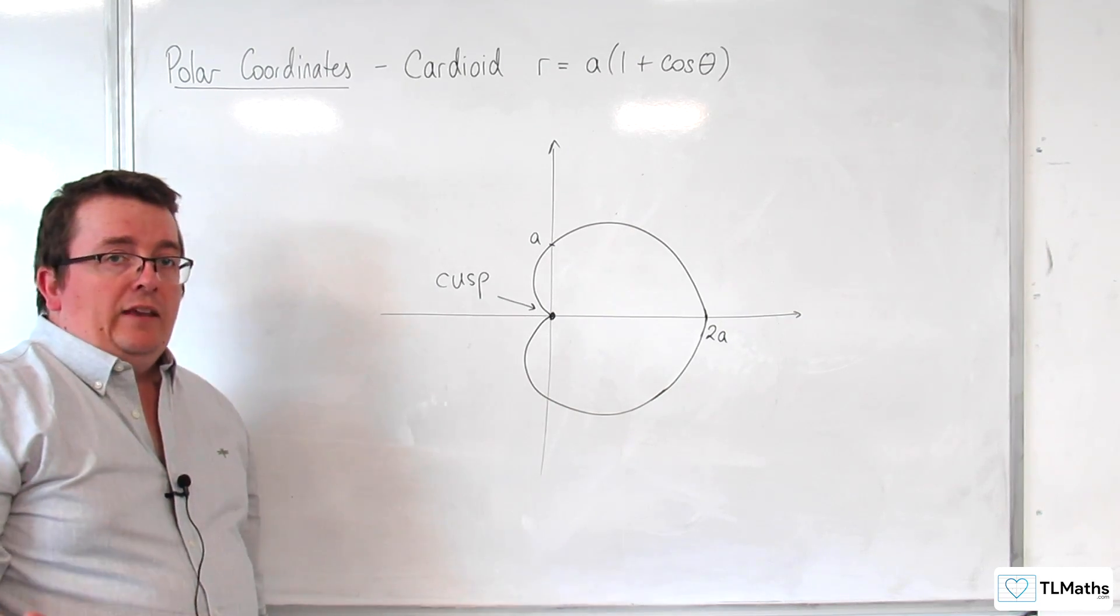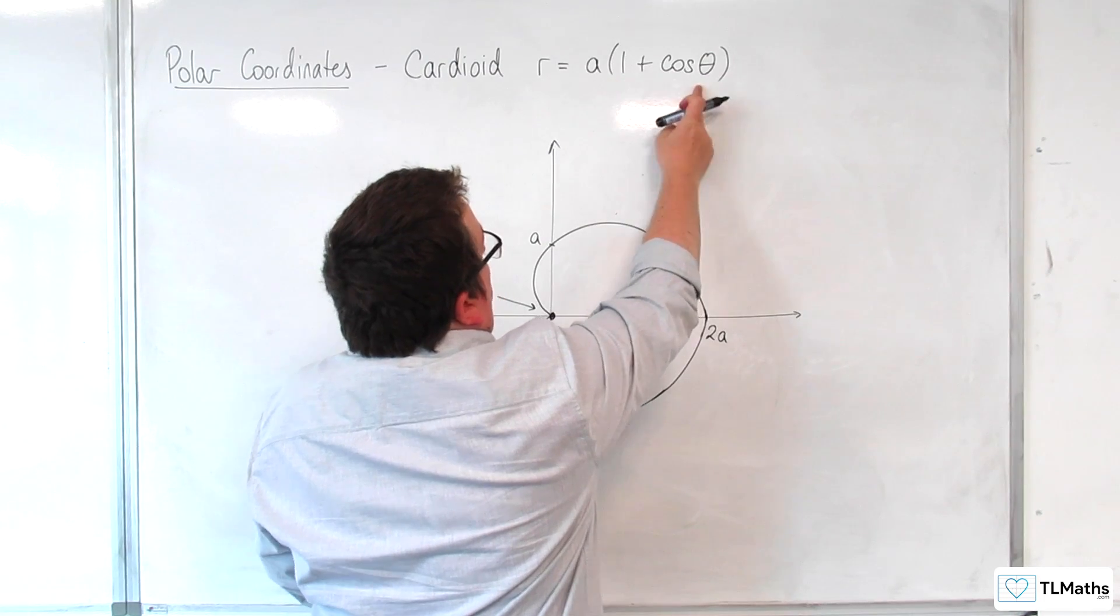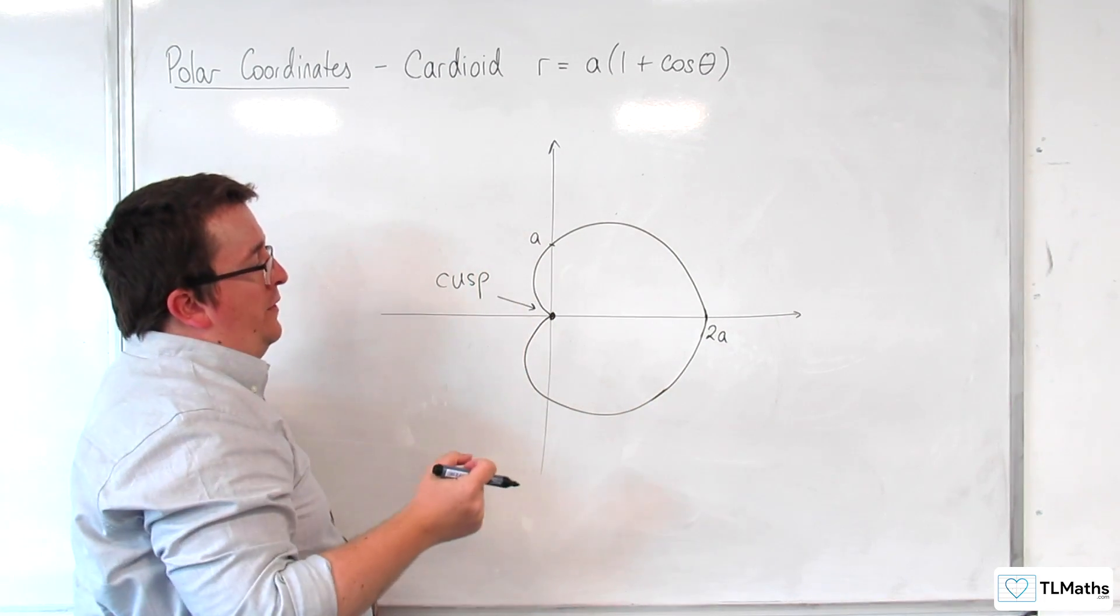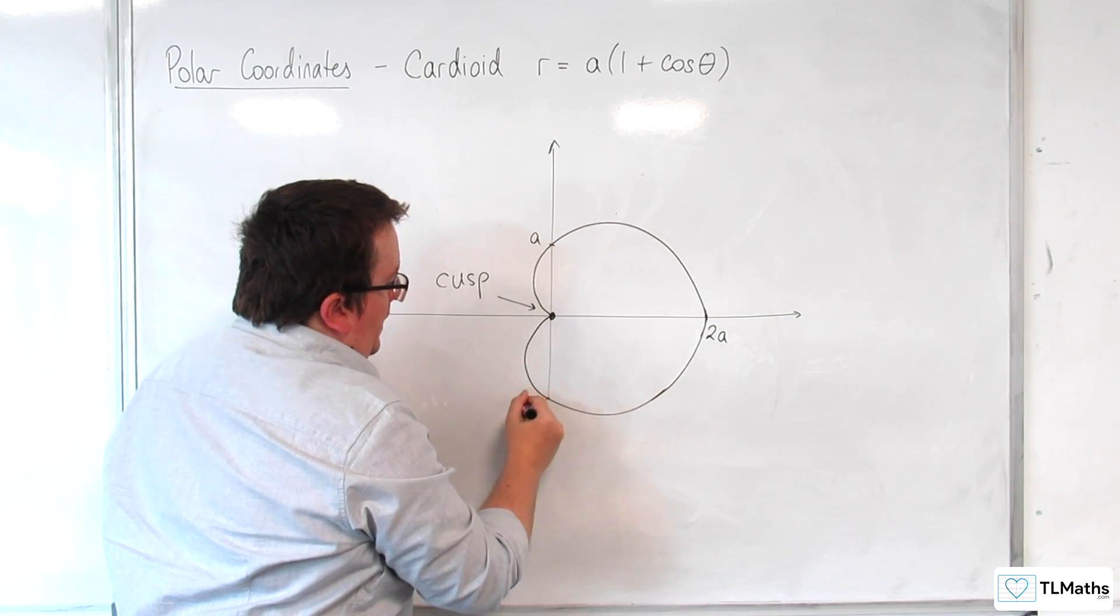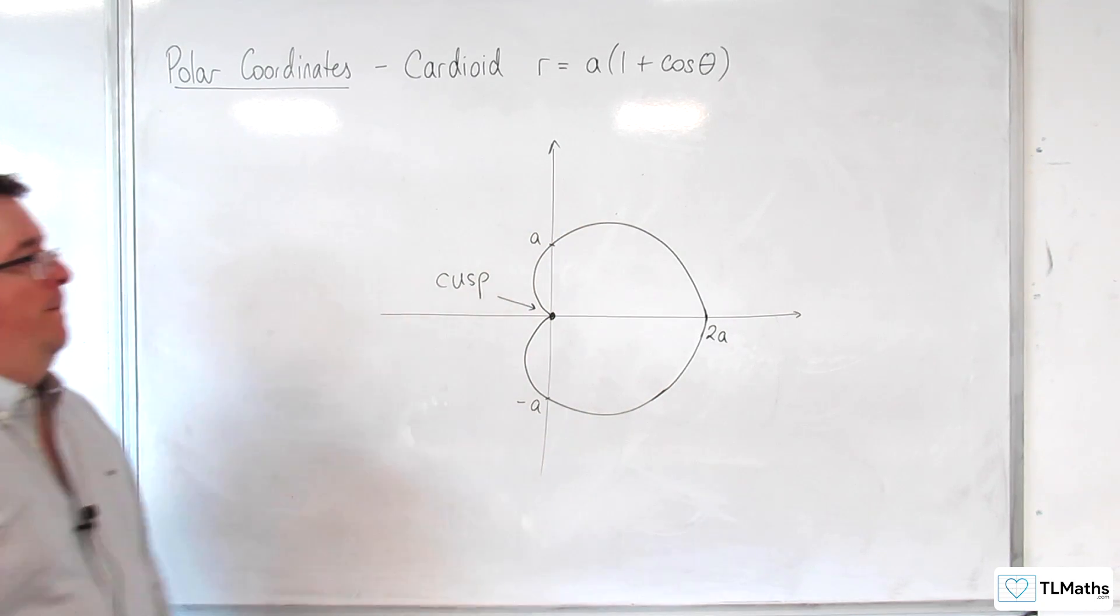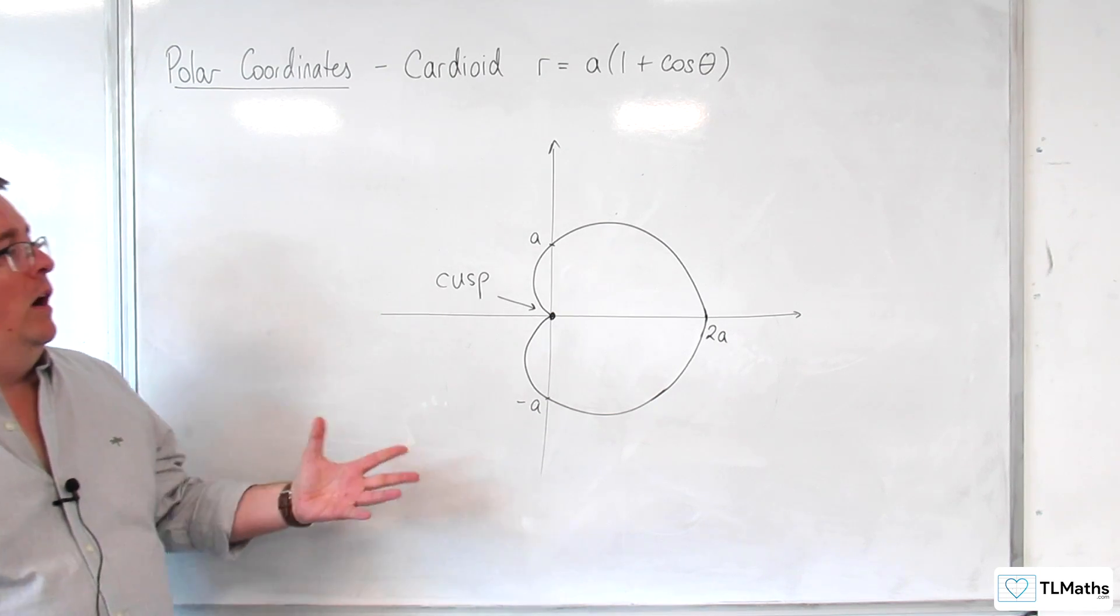And when theta is pi, cosine of pi is minus 1, so you get A times 1, take away 1, which is why you have it at the origin there. So this point is minus A down here. So this is how we can sketch a cardioid.